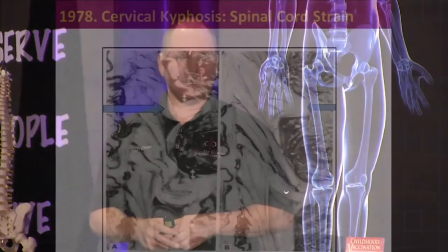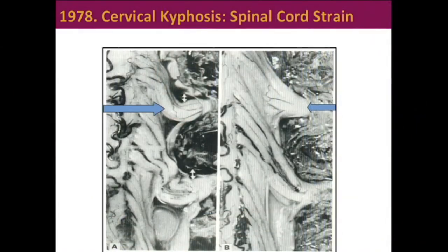This has been measured and tested. When you lose your cervical curve — that's the big one, so it's more profound in the neck — this is what your spinal cord will look like on the right, compared to having a deep cervical curve on the left. You can see the difference in the tension in the nerve roots and the spinal cord. This comes from Alf Bregg's work in 1978.